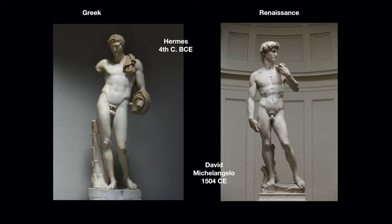About a thousand years later you have Michelangelo's David, employing the same contrapposto pose with that same restrained motion. But this time instead of a Greek god it's David — the guy who fights Goliath — and this is right before he flings his rock. The work is nicknamed 'the Giant' because it's huge, even though David was the small one in the story, and it became a symbol for the strength of Florence.